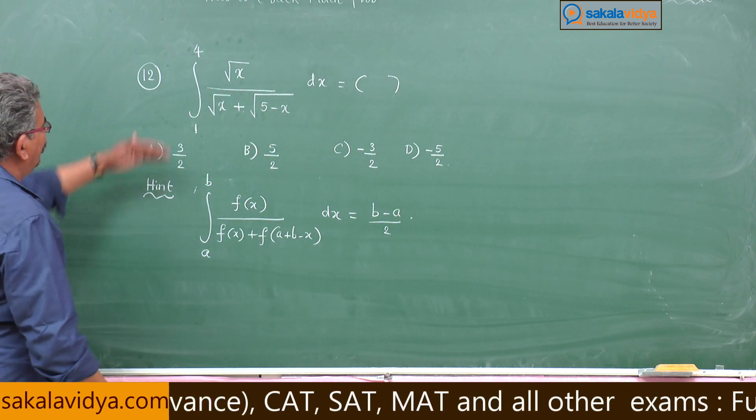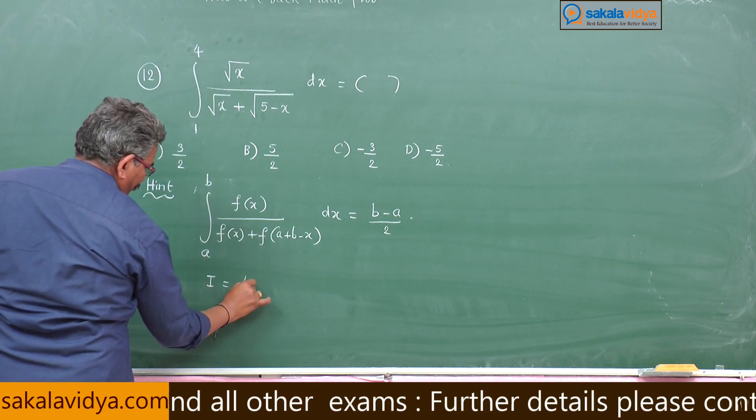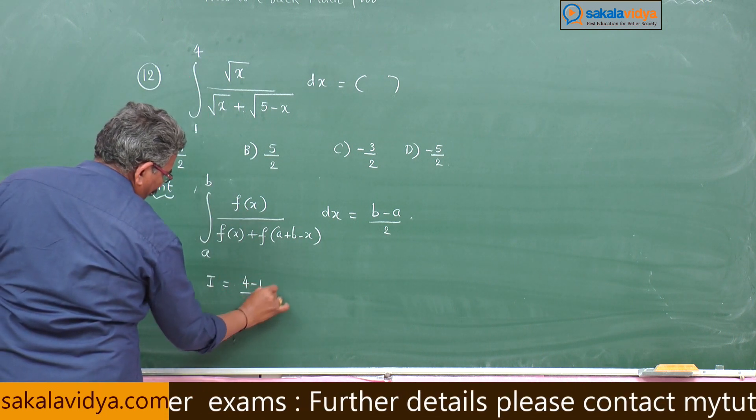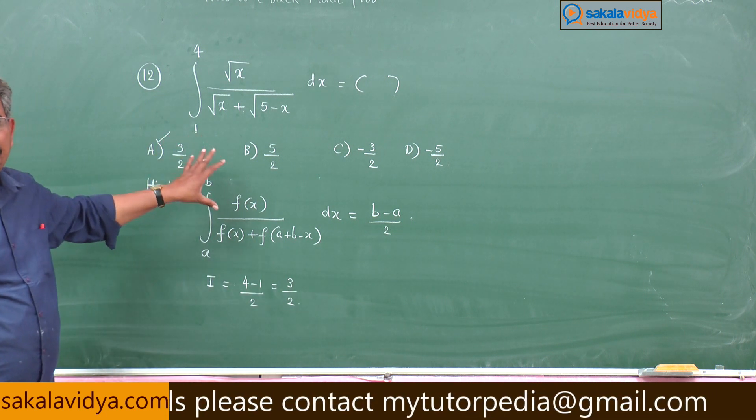So this is the answer. Our answer i is equal to 4 minus 1 by 2, this will be 3 by 2. So first option is the right option.